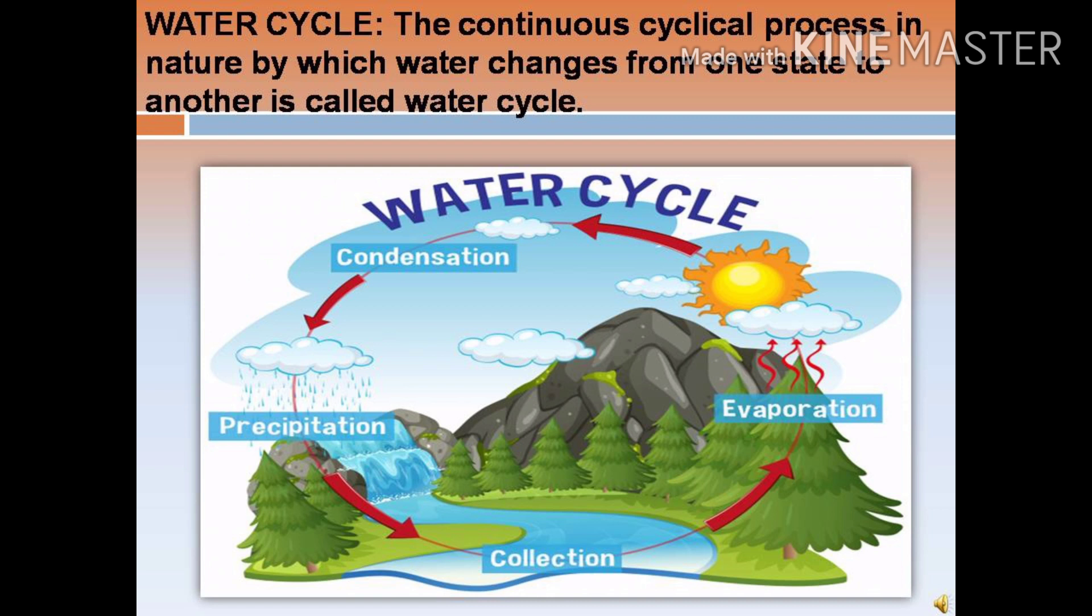You can see in this picture, the sun heats up water present in oceans, lakes, and rivers. And this water turns into water vapour. This process is called evaporation.